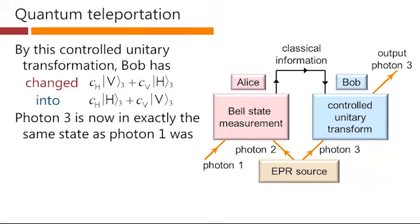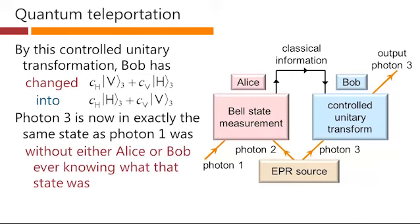So photon 3 is now in exactly the same state as photon 1 was without either Alice or Bob actually even knowing what that state was. They have not actually measured the state of photon 1, but somehow they've managed to take that state and put it onto the state of photon 3. So they didn't actually have to know CH and CV, these coefficients of the horizontal and vertical polarization of photon 1, and yet they've managed to make photon 3 have exactly these same coefficients.